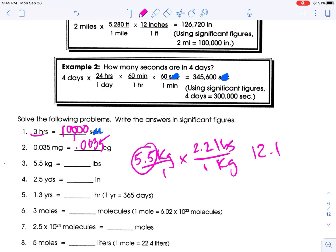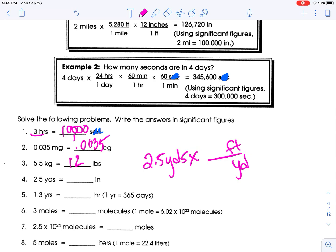2.5 yards to inches. 2.5 yards times - I don't know yards to inches, but I do know yards to feet. In one yard there are three feet, and then I do know that in one foot there's 12 inches. So 2.5 times 3 times 12 is 90. That's only one sig fig though, so I could do 90 with a line, or I could do 9.0 times 10 to the 1.